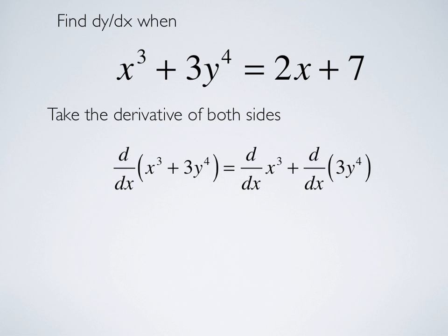So, on the left-hand side, we have d dx of x cubed plus 3y to the fourth. That's d dx of x cubed plus d dx of 3y to the fourth. We get 3x squared for the first term.